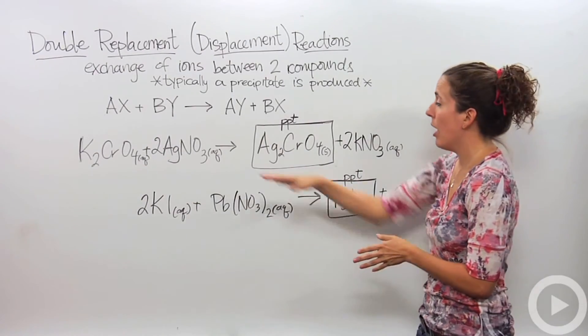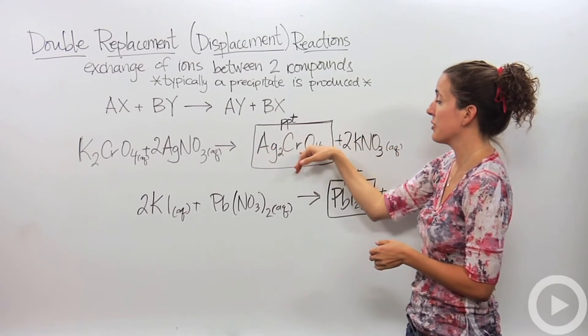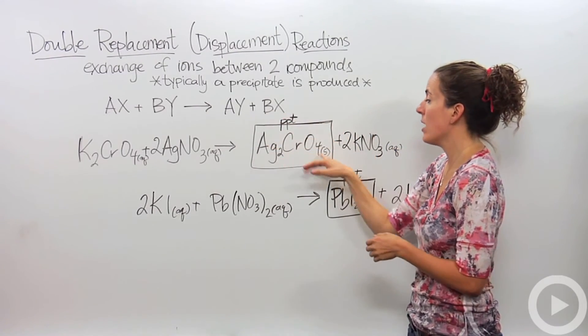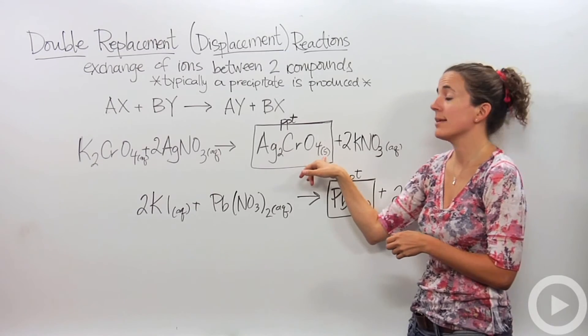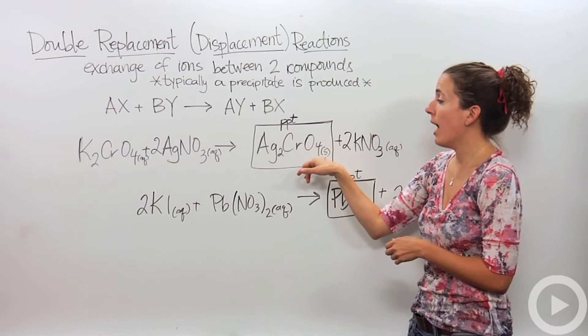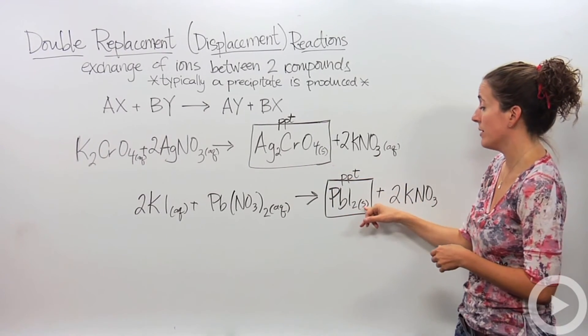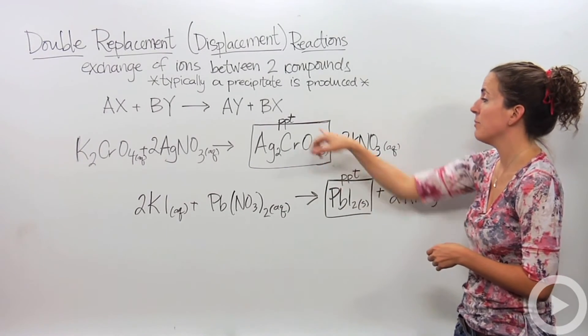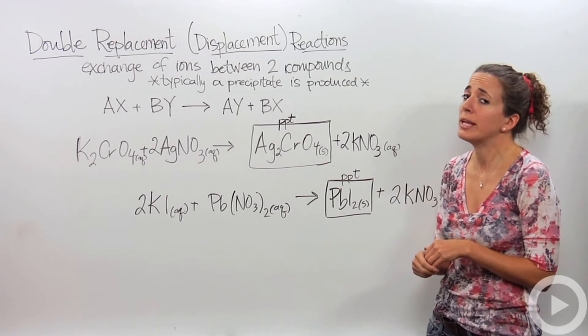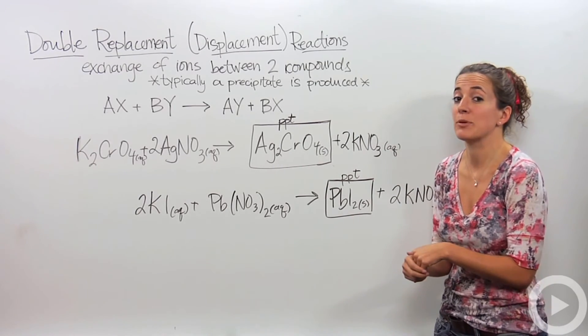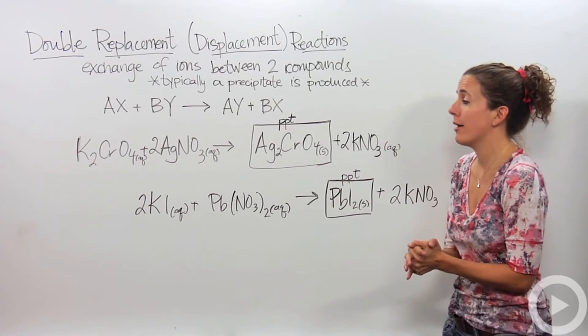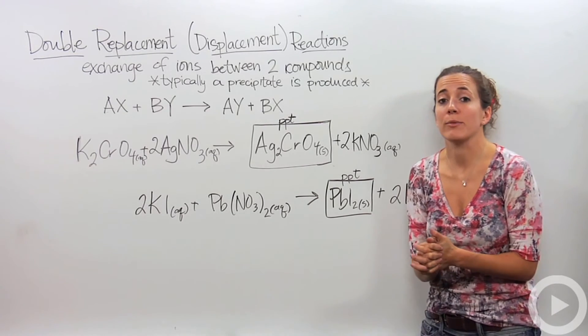All right, so the two reactions that you saw are written up here on the board. Notice the silver chromate is the precipitate. Notice I wrote that as a solid as a state of matter. And down here we have the second reaction that had the yellow precipitate, the lead. Notice again I wrote that as a solid. PPT you might see frequently, that just indicates that it's a precipitate. And those are very common examples of what a double replacement reaction is.